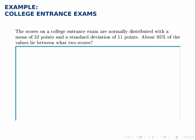The scores in a college entrance exam are normally distributed with a mean of 52 points and a standard deviation of 11 points, and we're asked to find what two scores encompass 95% of the test takers.